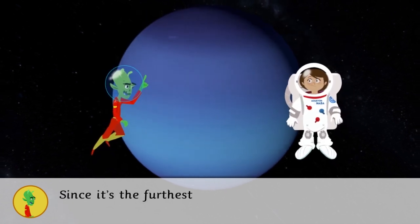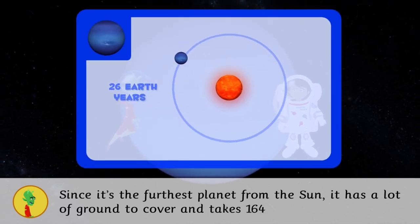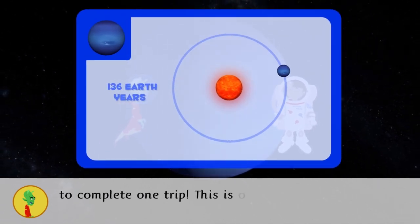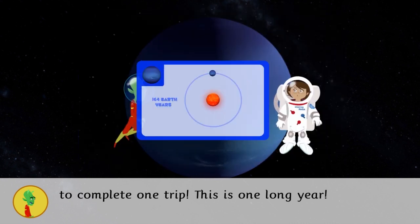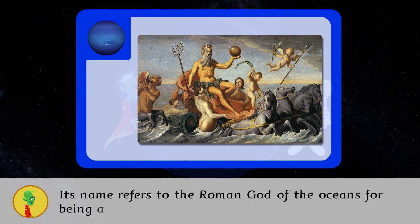Since it's the furthest planet from the Sun, it has a lot of ground to cover and takes 164 Earth years to complete one trip. This is one long year. Its name refers to the Roman god of the oceans for being a blue planet.